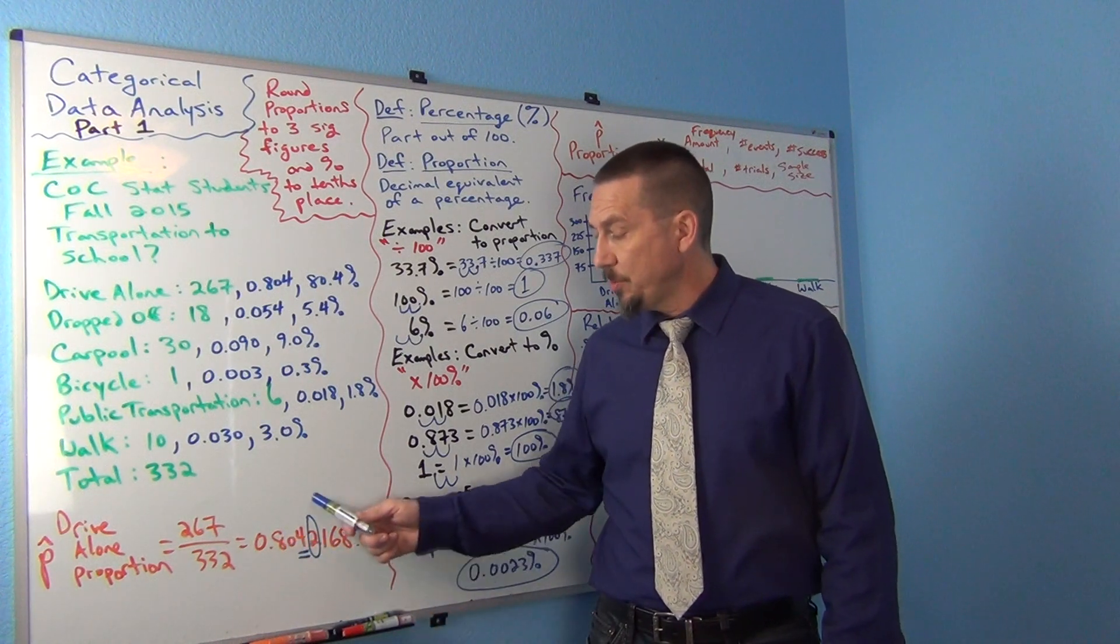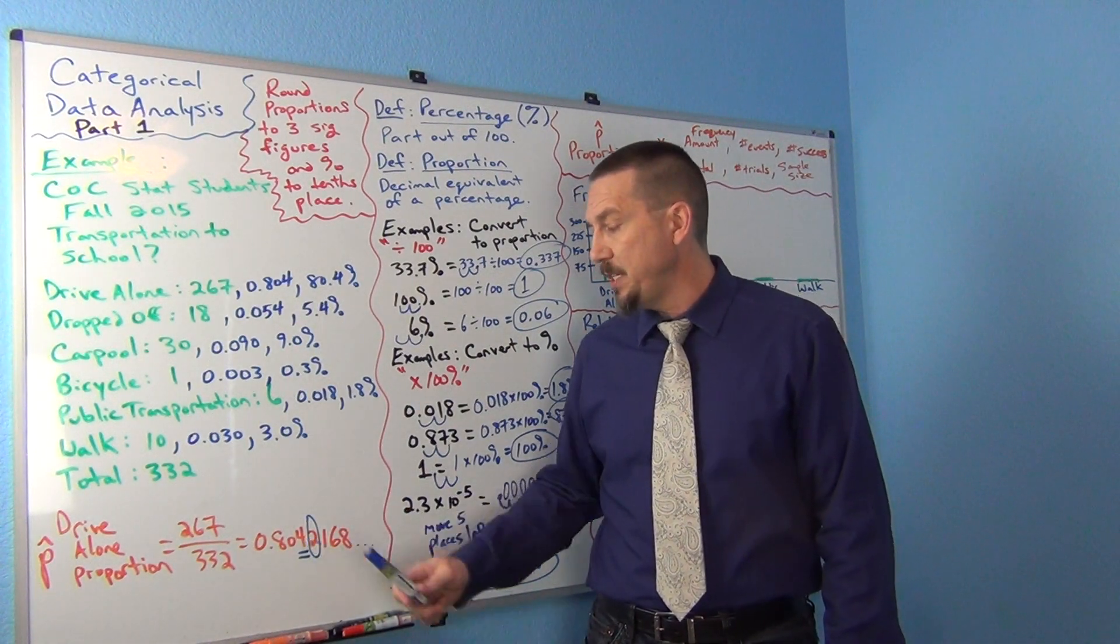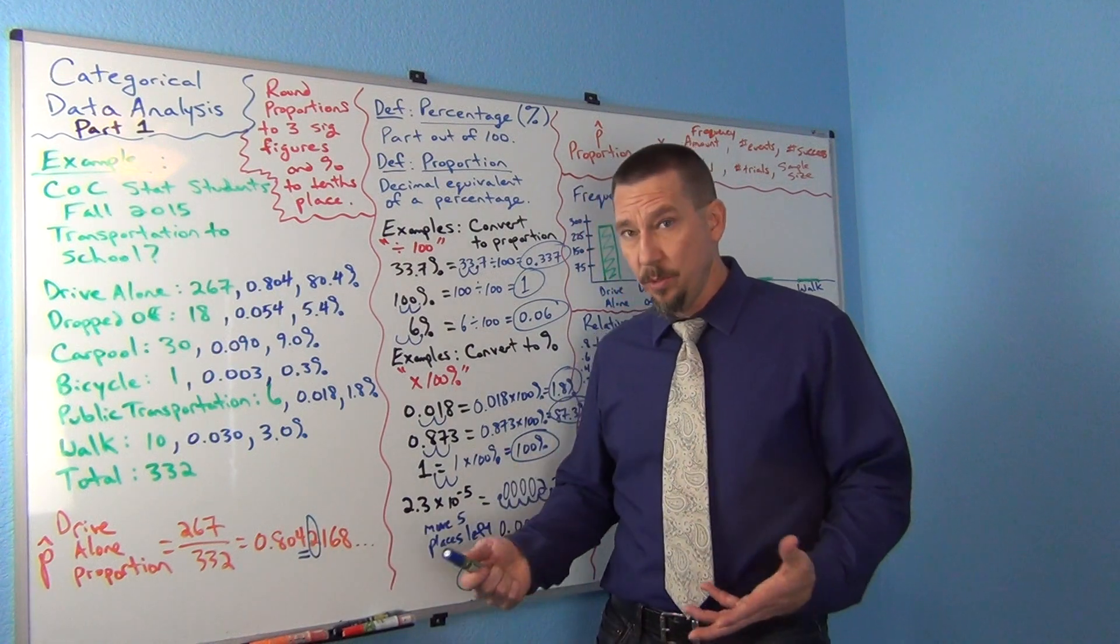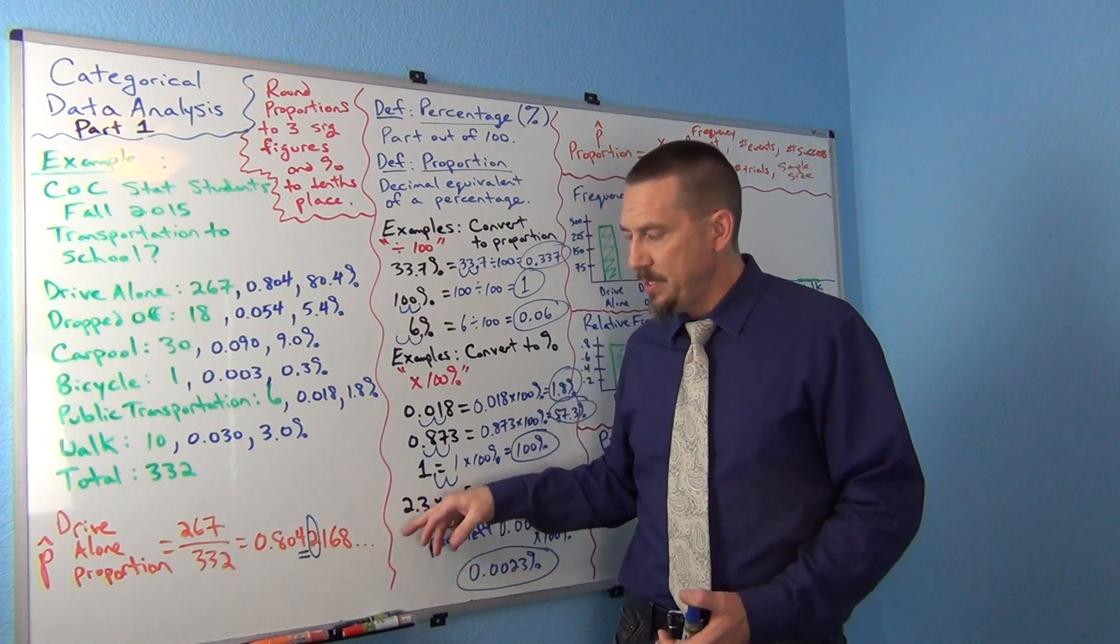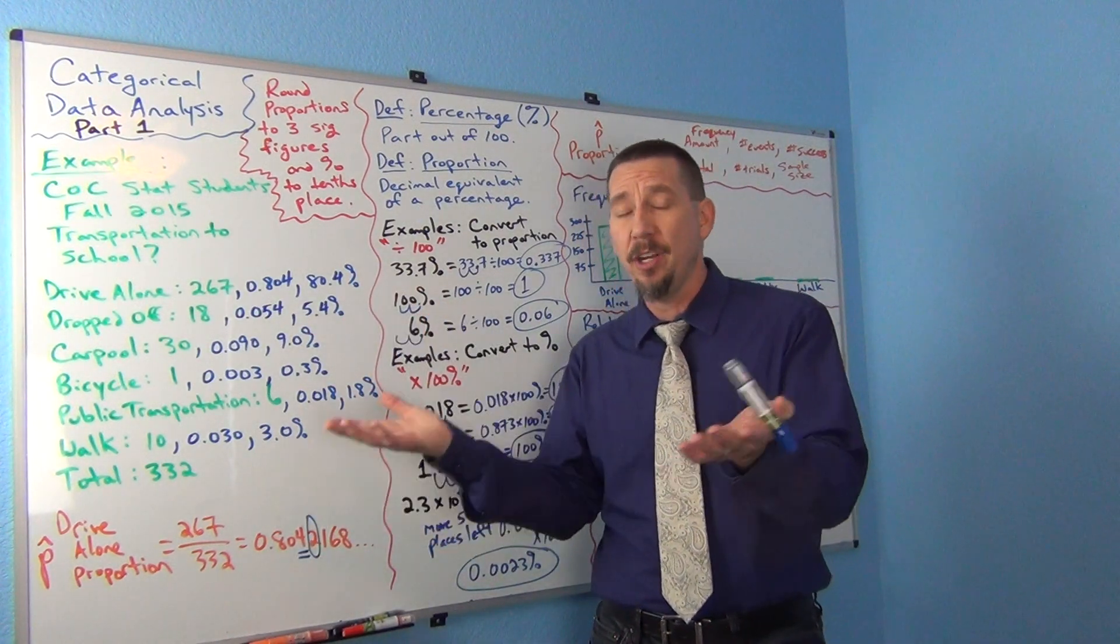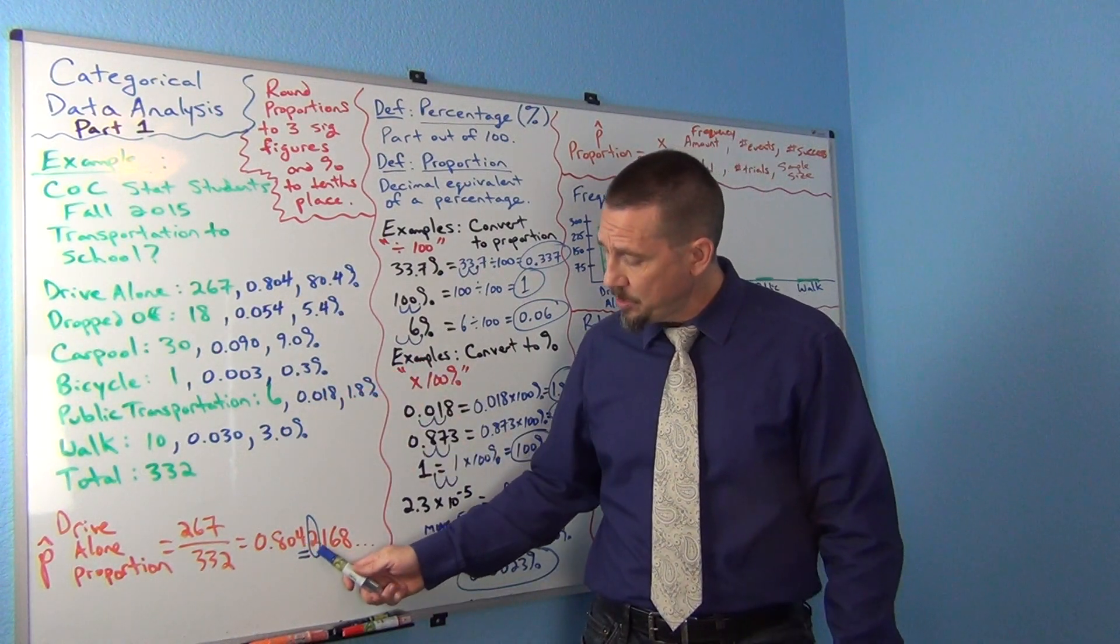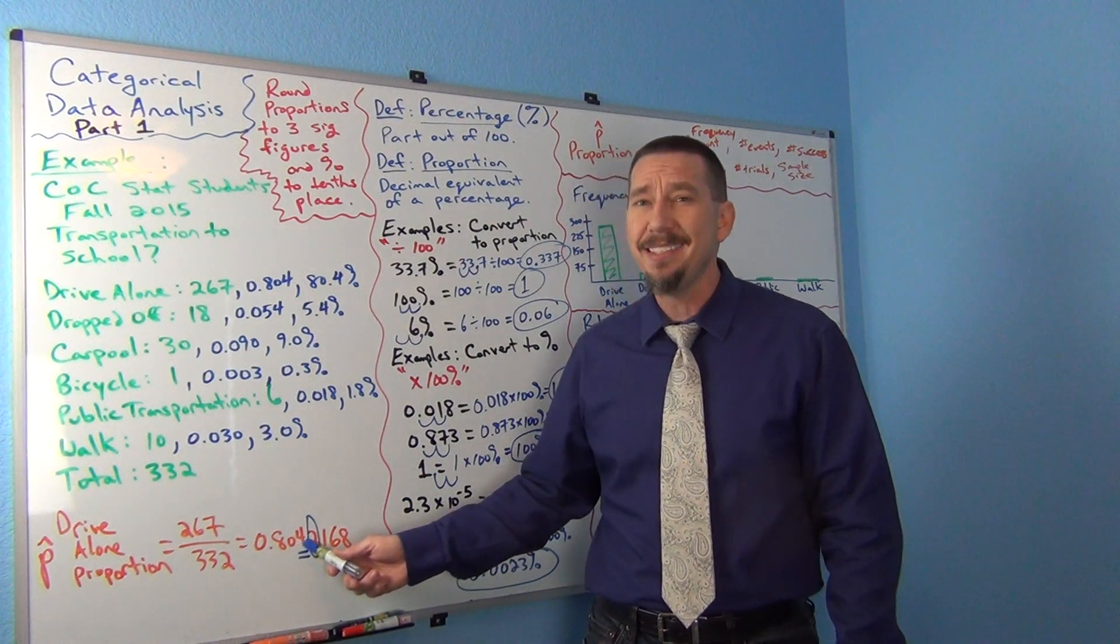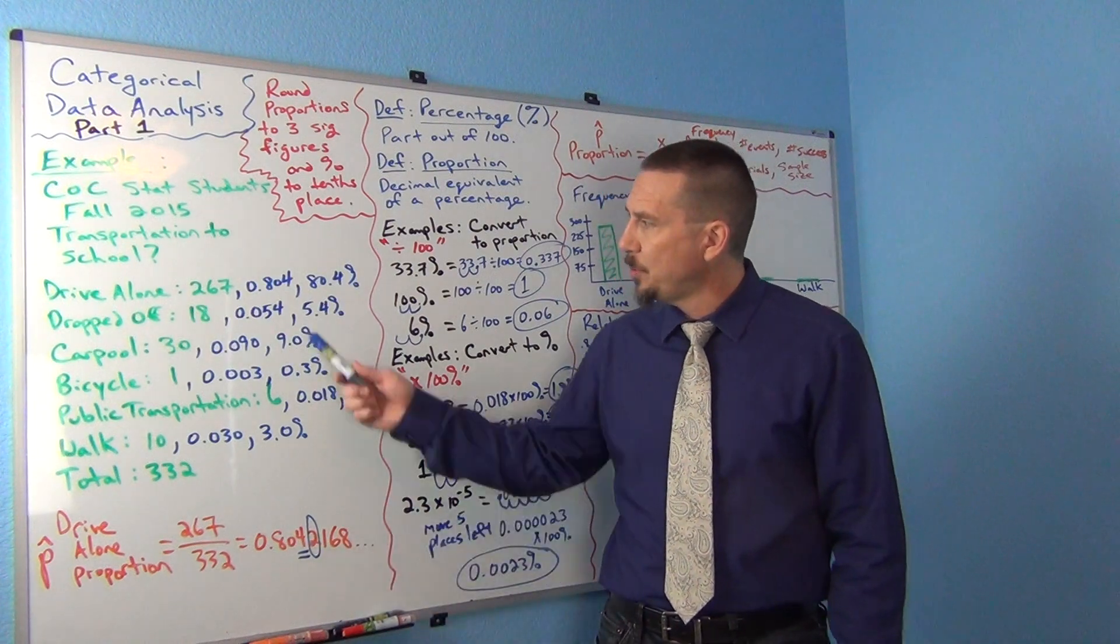If this number is zero through four, the number to the right, then I'm going to leave this place value alone. And that would be called rounding down. In general, by the way, this number, 0.8042168, is between 0.804 and 0.805. And all you're trying to do is figure out which one is it closer to. Because this number, the number next to the four is a two, that means this is closer to 0.804. I should round down. So I'm going to round that to 0.804.